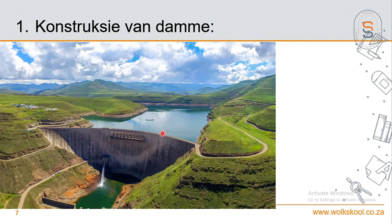In die drooggelêde gedeelte word dan die wal gebou, en uiteindelik sal die rivier weer toegemaak word sodat die water versamel teen die damwal. Die res sal verder vloei - hierdie riviertjie sal voortgaan om te vloei want dis wetgewing: jy kan nie 'n dam bou en die rivier afsny nie, want langs die rivier woon baie mense wat die water gebruik as besproeiingswater vir hulle plante of vir huishoudelike gebruik. Daar moet altyd 'n normale vloei van die rivier wees.